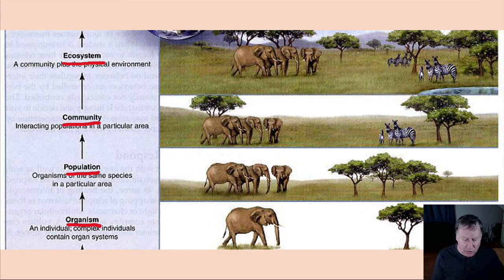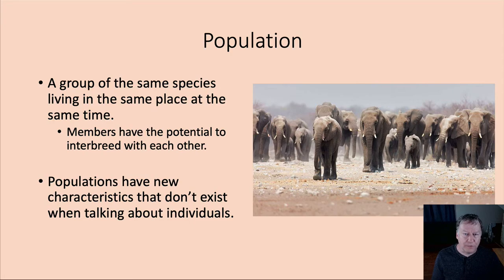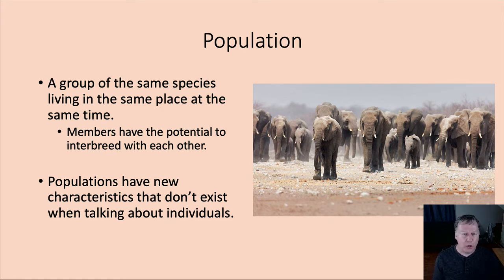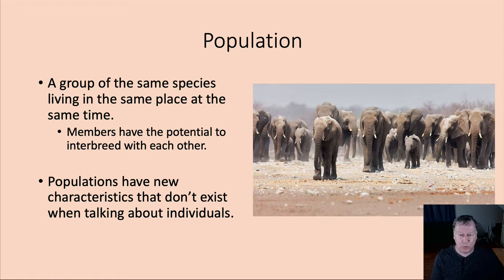In today's presentation, we're going to focus on the level of populations. A population is a group of species living in the same place at the same time — basically members that have the potential to interbreed with each other. All individuals must be of the same species and capable of interbreeding. Two different species represent two different populations. Populations have certain unique characteristics that do not apply to individual organisms or to communities.